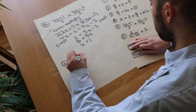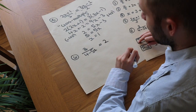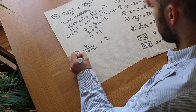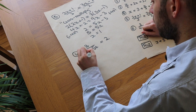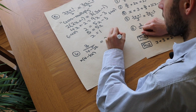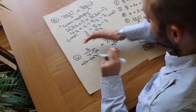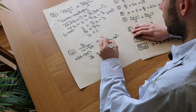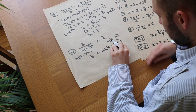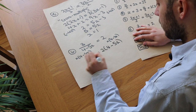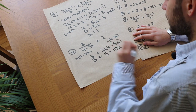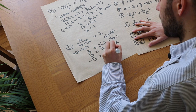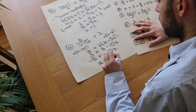Question 6: 3 over (4 minus 5x) is equal to 2. We don't want fractions, so we multiply both sides by the denominator (4 minus 5x). That leaves 3 on the left, and on the right we have 2 times (4 minus 5x). Expanding gives 3 equals 8 minus 10x. Subtracting 8 from both sides gives minus 5 equals minus 10x. Dividing both sides by minus 10 gives x equals one half.